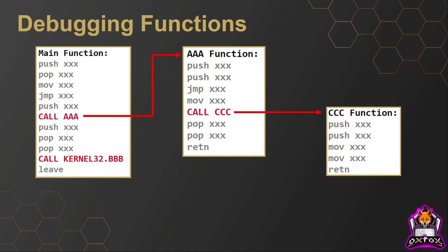By stepping through the code I'll eventually get to the end of the function, evidenced by the return command. Once that command executes, I'll jump to the instruction directly after the call to the triple-C function and I'm back in the AAA function. Stepping through again, I'll eventually hit the return instruction and then jump to the instruction directly after the call to the AAA function.